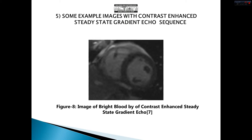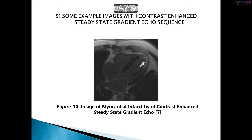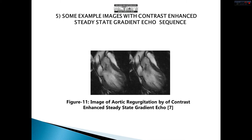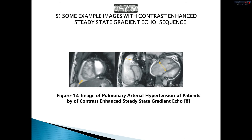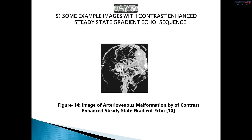Now we can observe some example images obtained by this technique. This is an image of blood flow by this method. This is an image of left ventricle outflow. This is an image from myocardial follow-up study. This is an image of aortic regurgitation. This is an image from pulmonary arterial hypertension patient. This is an image of pulmonary end-diastole cardiac chamber obtained by this method. This is an image from arterial venous malformation.